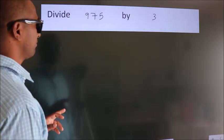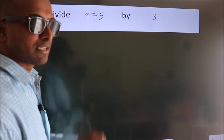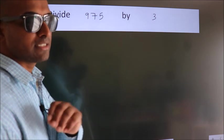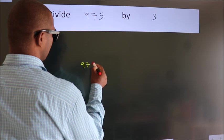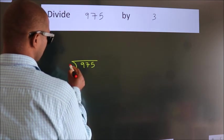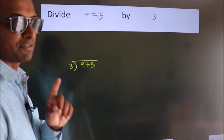Divide 975 by 3. To do this division, we should frame it in this way. 975 here, 3 here. This is your step 1.